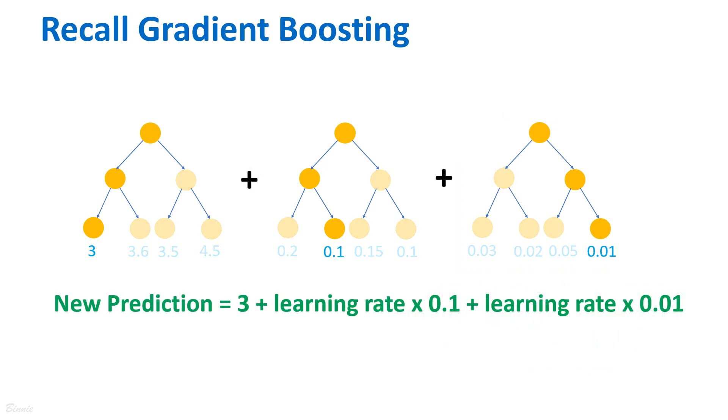Finally, gradient boosting stops building trees until criteria such as the maximum number of trees are met. The final prediction is a weighted sum of the predictions from all the individual models.